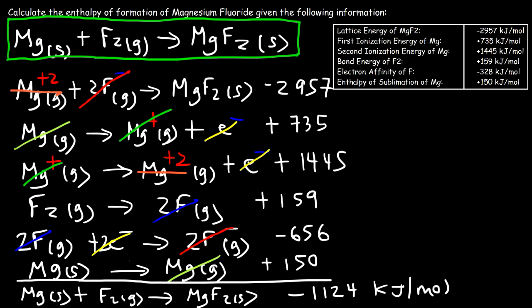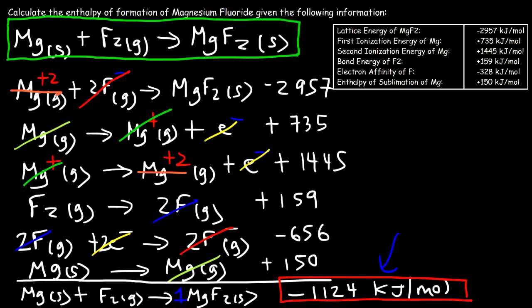This value of −1,124 kJ/mol is the enthalpy of formation of solid magnesium fluoride produced from its elements in their natural states — for one mole of MgF₂. If you doubled it to two moles, this would become −2,248 kJ/mol. Keep in mind, if you already have the enthalpy of formation of a substance, you can use the same process to calculate the lattice energy instead.